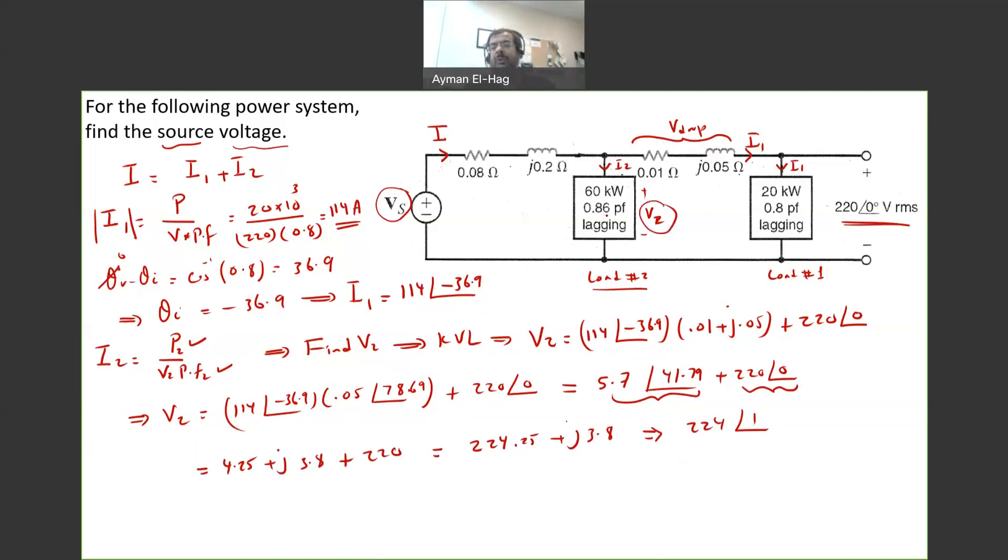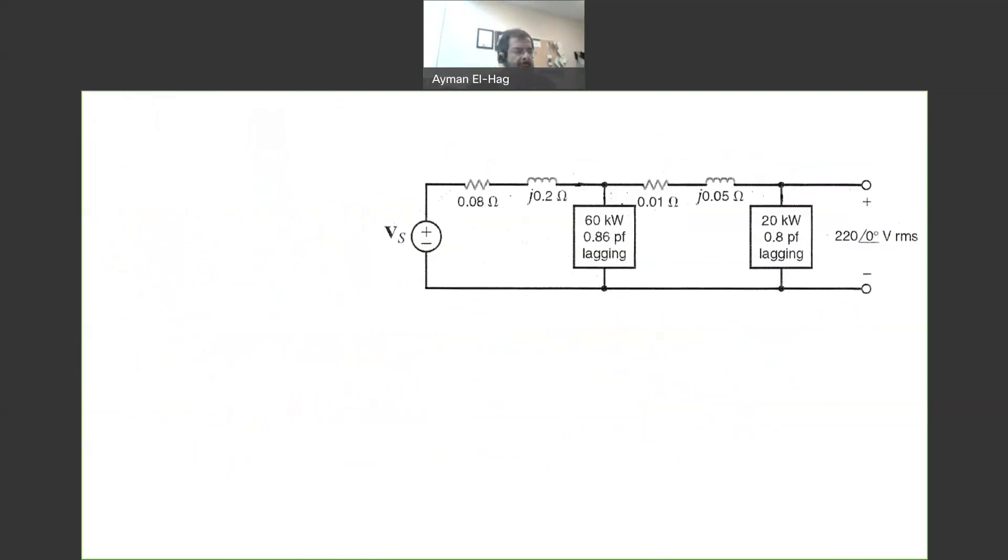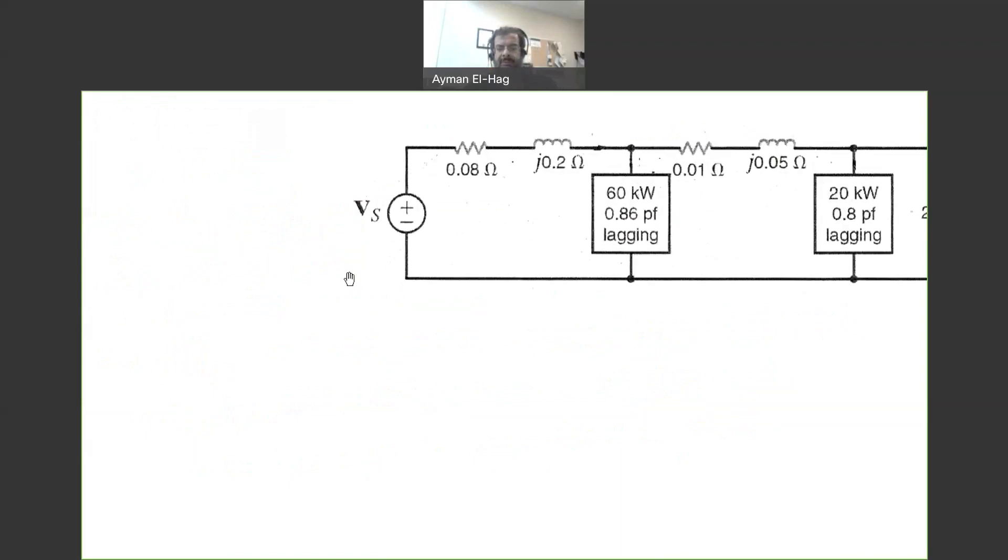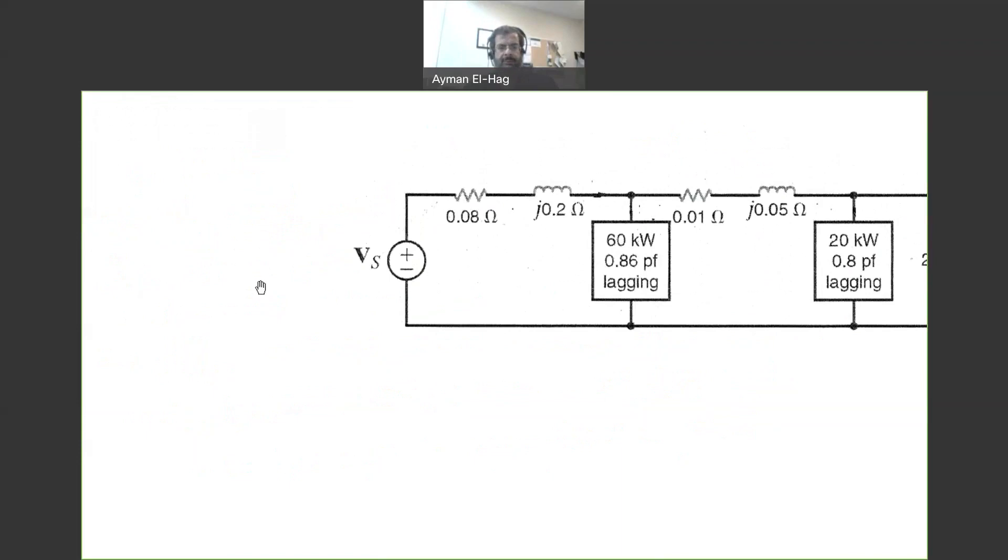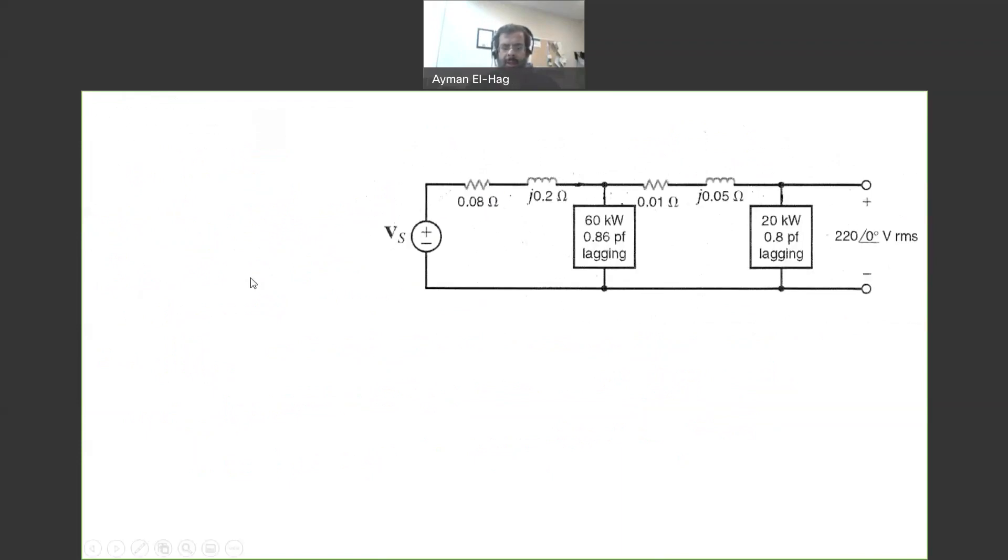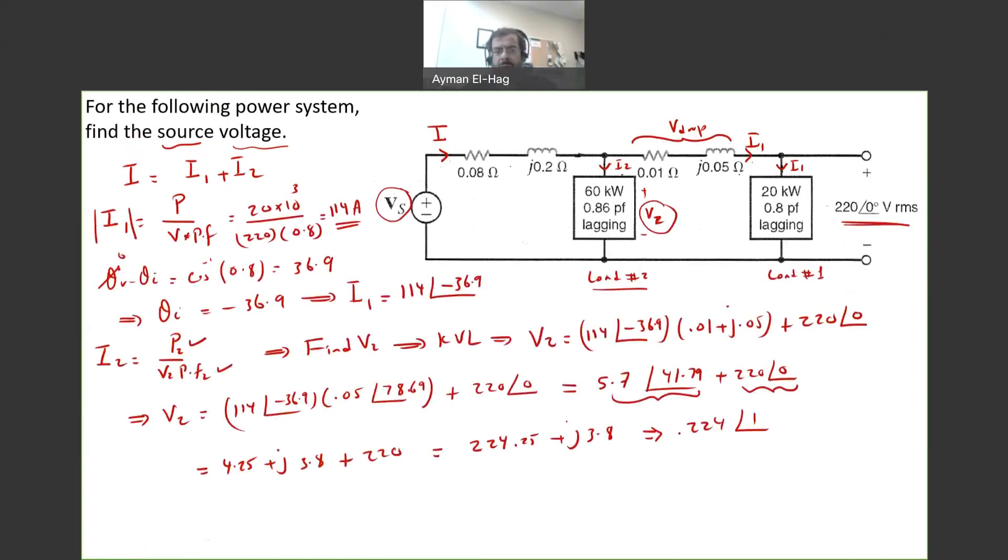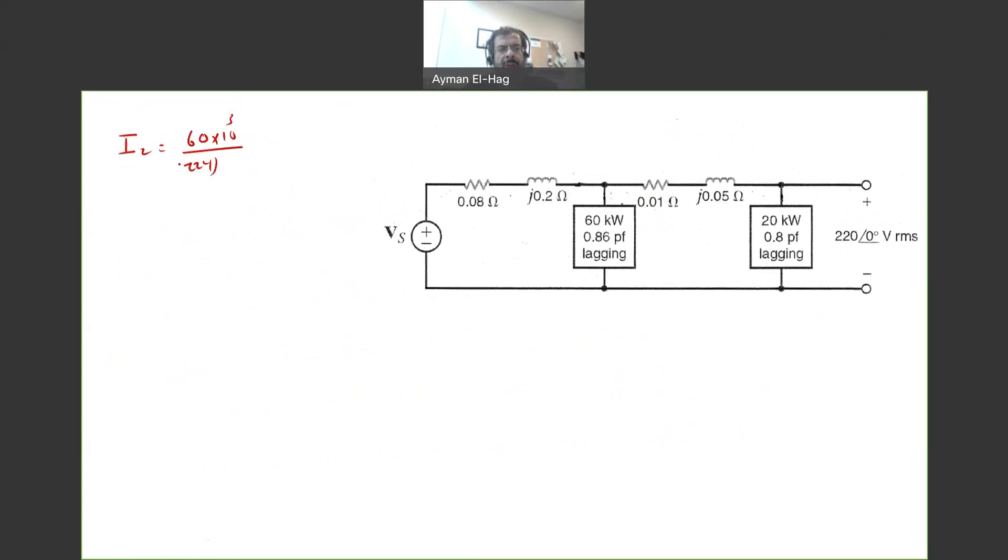Now I have V2. I can find I2. I want to find now my I2. My I2 is equal to the P2, which is the 60 times 10 to the power of 3, divided by the voltage, which is calculated here, which is 224, times the power factor, which is 0.86. And this is equal to 311.